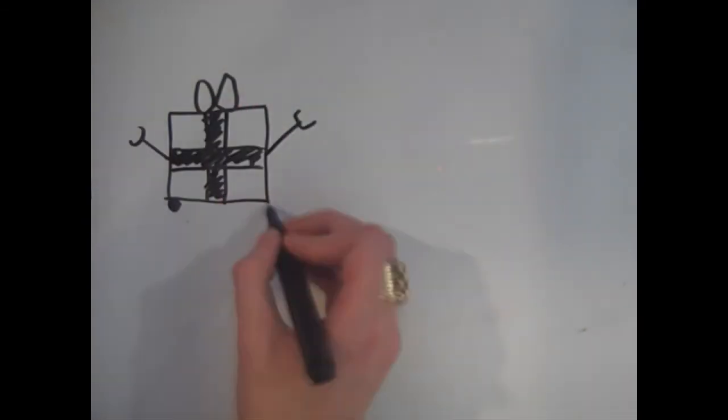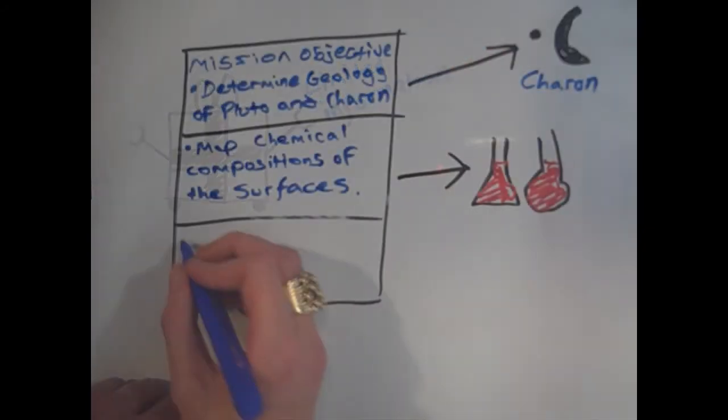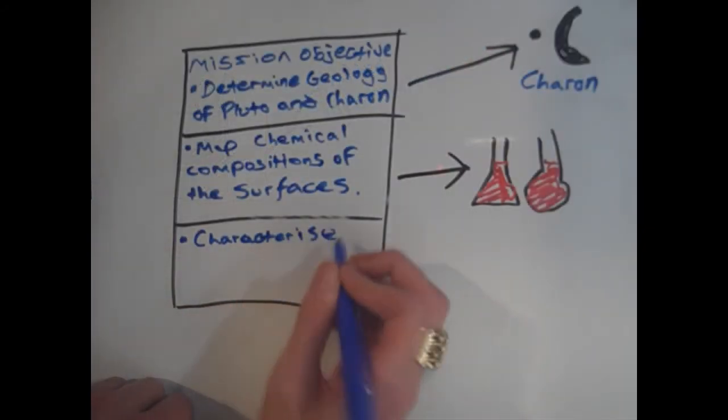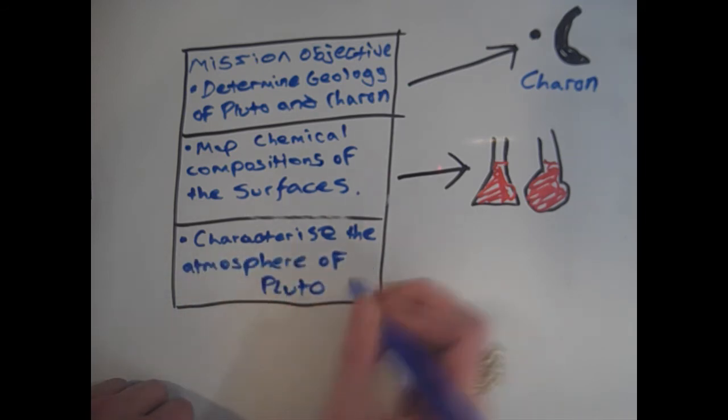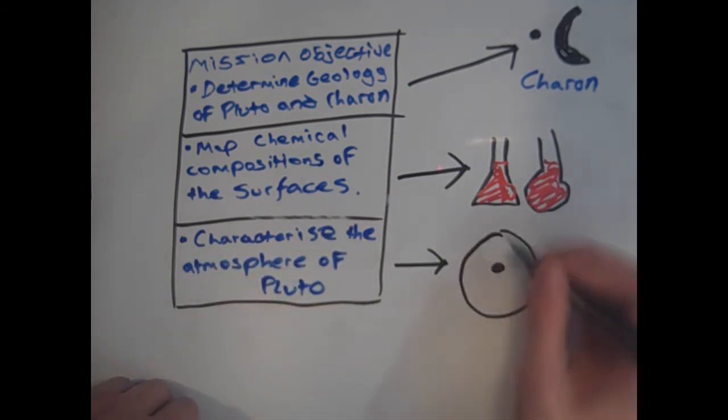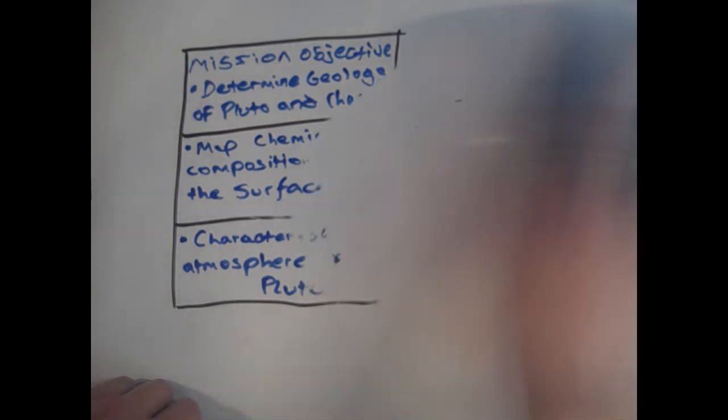The information about New Horizons will be limited, due to the limited timeframe. Nonetheless, the core mission objectives for New Horizons are to determine the global geology of Pluto and its largest moon Charon, map chemical compositions of their surfaces, and characterize the atmosphere of Pluto. There's probably more we don't know about Pluto than we do.